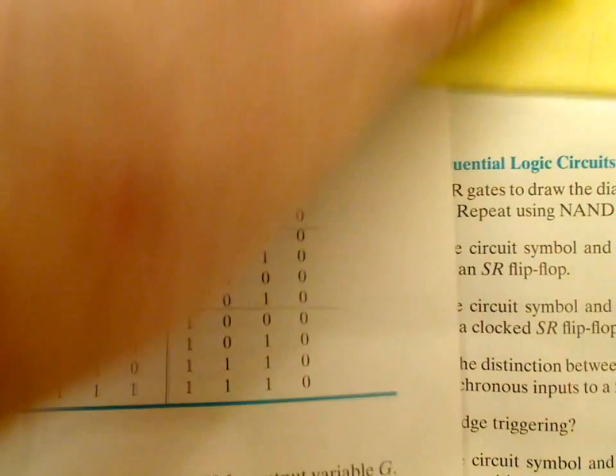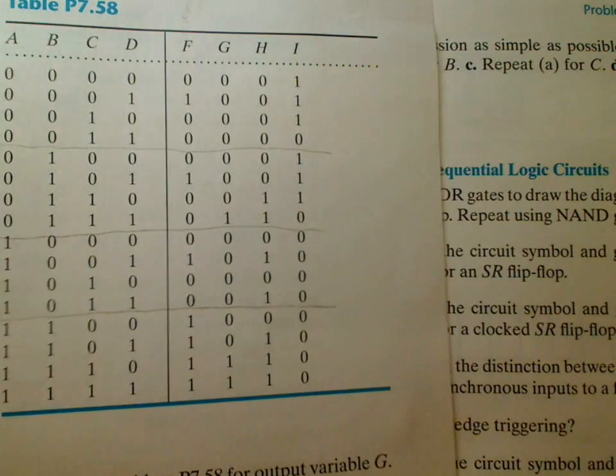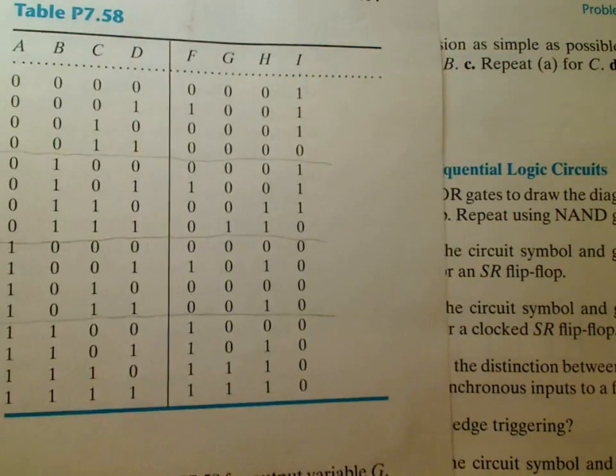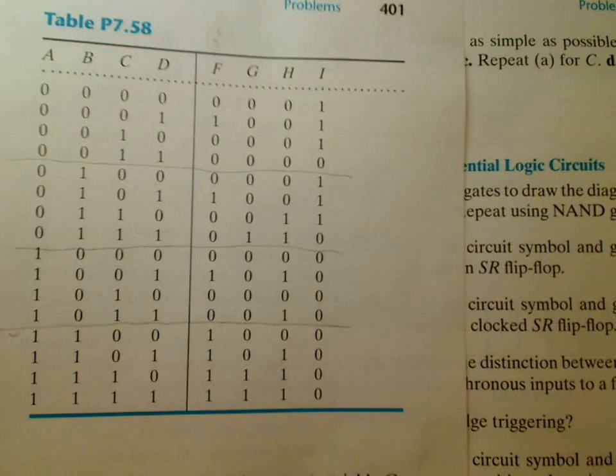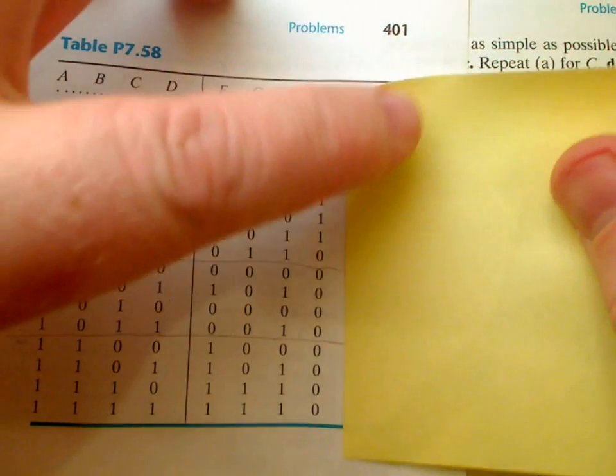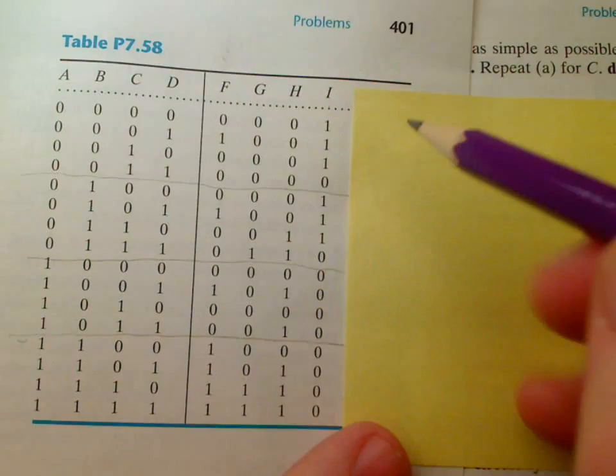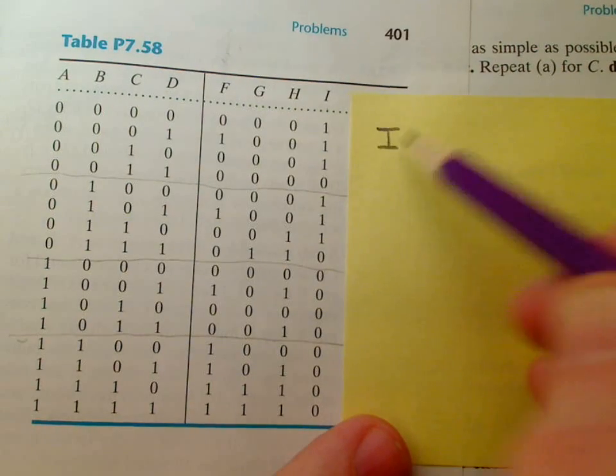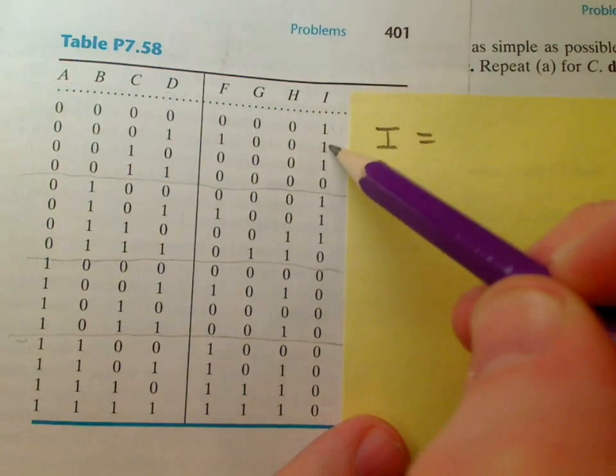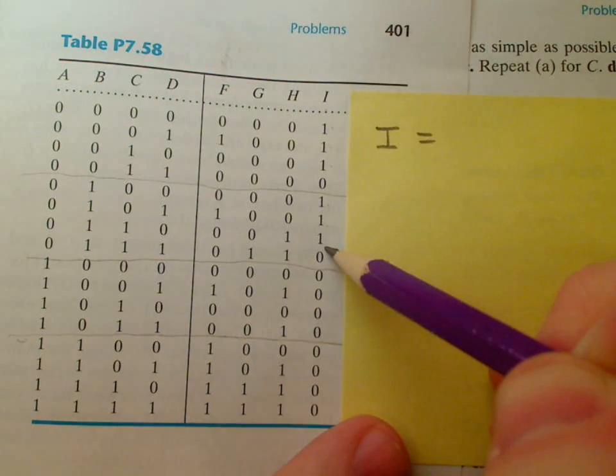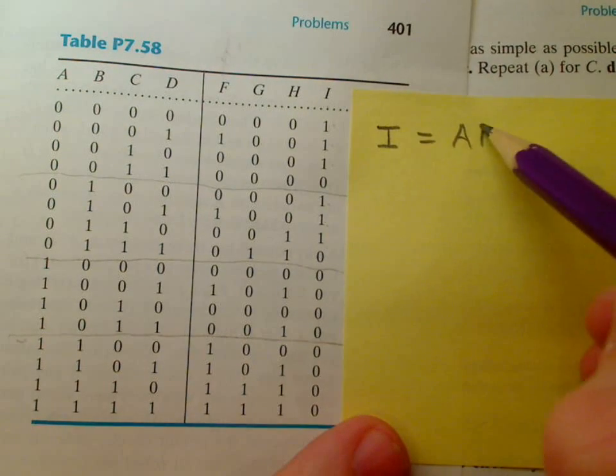Now if we wanted to write out the sum of products for I, without using the Karnaugh map, and see how it compares, what we could do is just notice that what we're going to have is 1, 2, 3, 4, 5, 6 terms that all have A, B, and C in there.